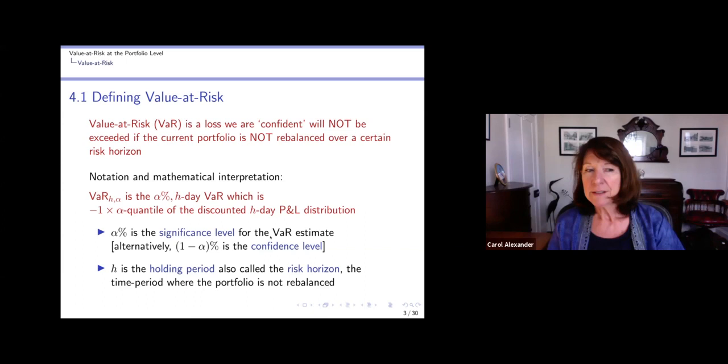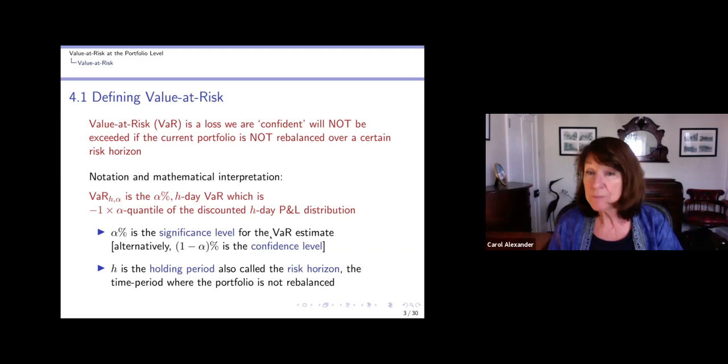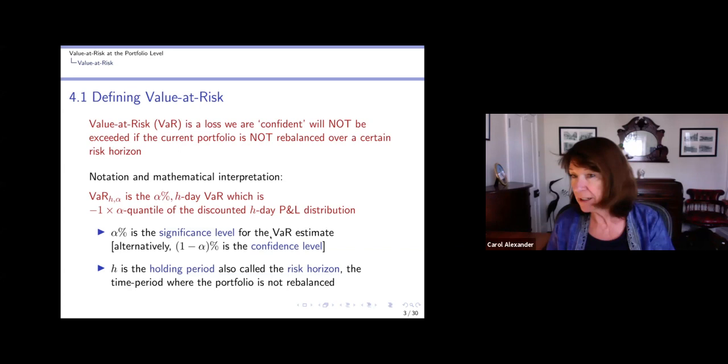So Value at Risk, VaR (little 'a', not capital 'A' which would stand for vector autoregression), is a loss. So if we say value at risk is one million, it means that we are confident we won't lose more than a million over a certain period of time, provided we don't buy or sell anything in the portfolio—we don't rebalance the portfolio, we hold it as it is.